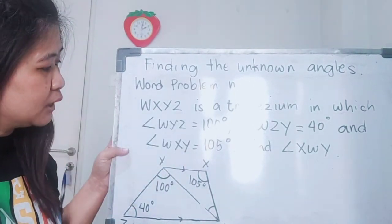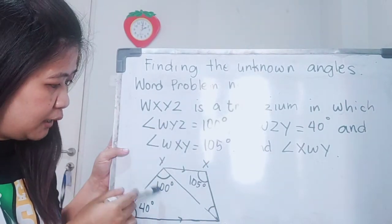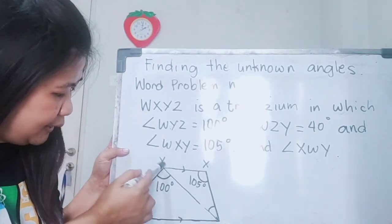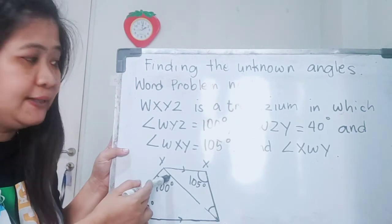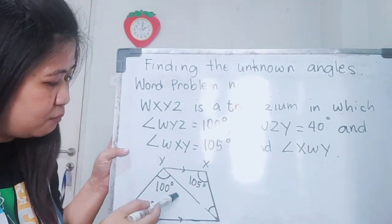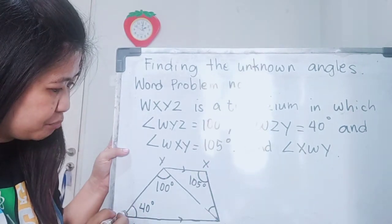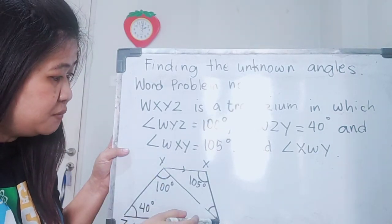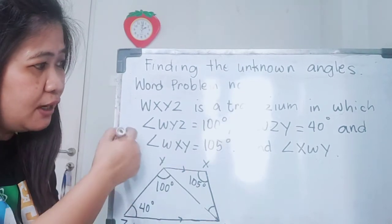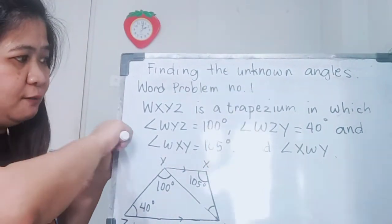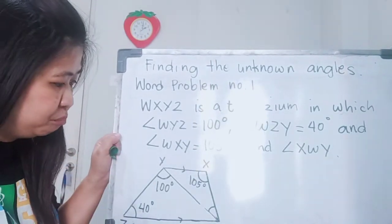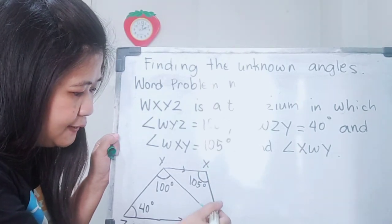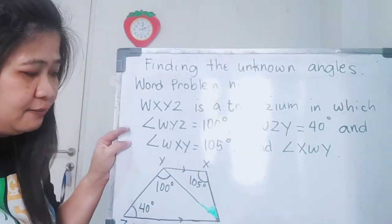Going back to the problem, angle WYZ is equal to 100 degrees. Let us locate and identify where it is. Angle WZY is 40 degrees, and angle WXY is 105 degrees. We need to find angle XWY. I'm going to use my green marker. This is the angle that we need to find out.